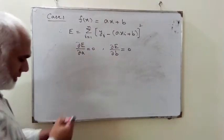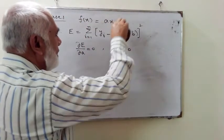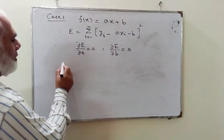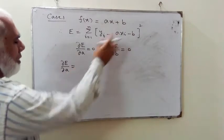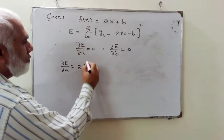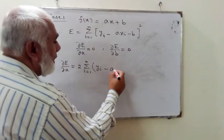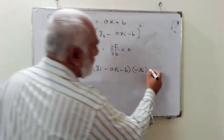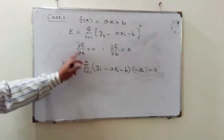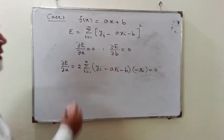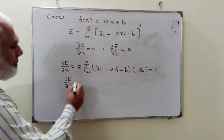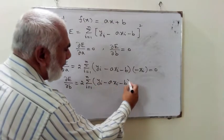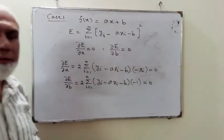On differentiating the equation — simplifying by changing signs inside the brackets to make the work easier — we get: partial E over partial a equals 2 times sigma (i=1 to n) of (yi minus a*xi minus b) times (minus xi), set equal to 0. Similarly, for the second equation, partial E over partial b equals 2 times sigma (i=1 to n) of (yi minus a*xi minus b) times (minus 1), and the result equals 0.